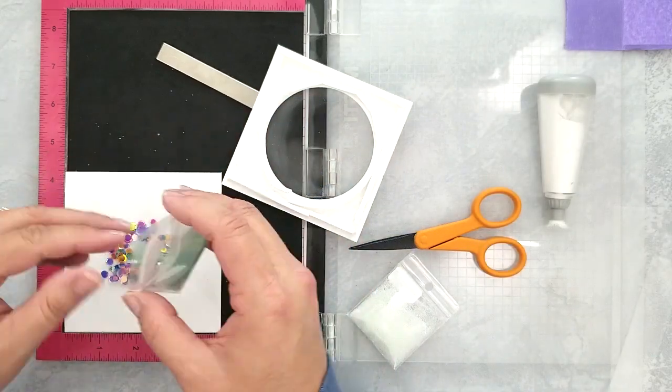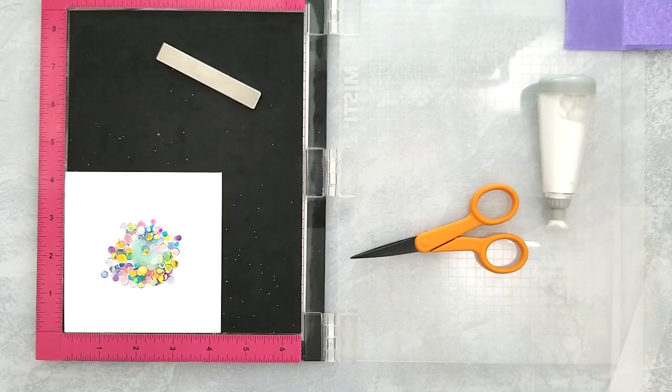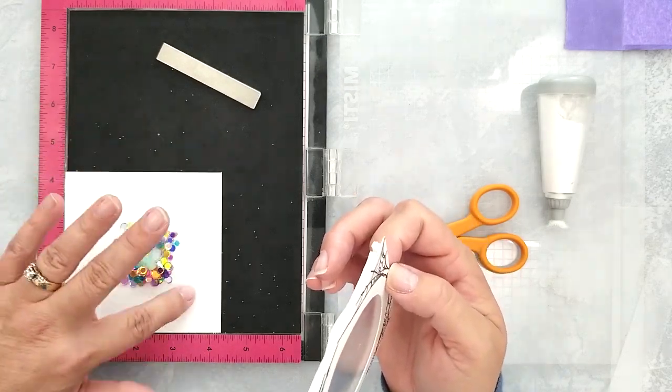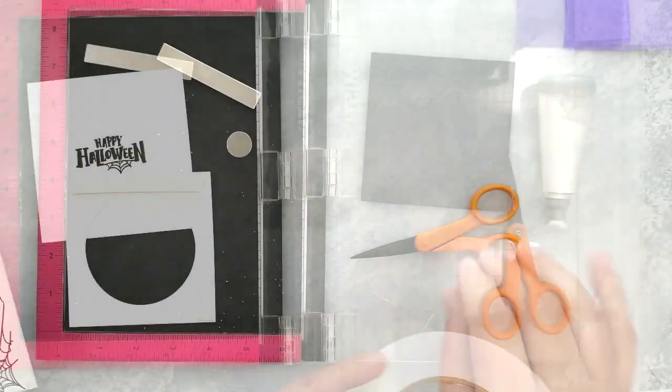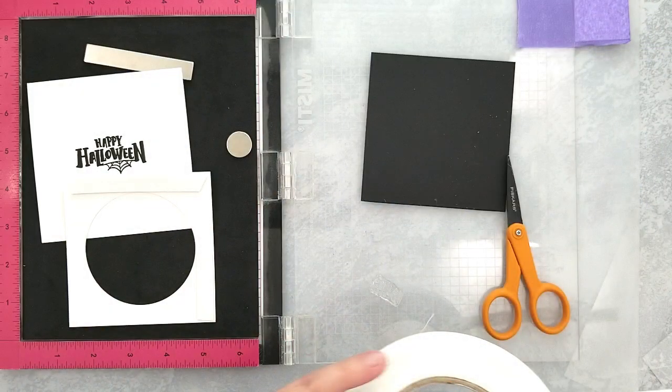Add any sequins or seed beads you want on top of a 4 1⁄4 by 4 1⁄4 inch card base. Remove the backing off of the 3D mounting foam and adhere the card panel over the sequins. And now we have our shaker ready.